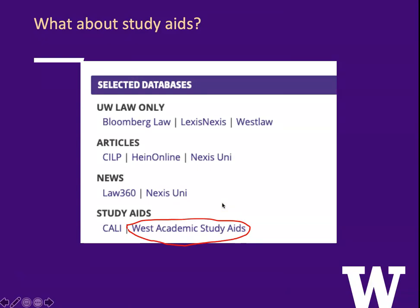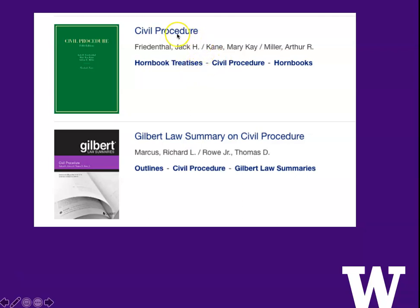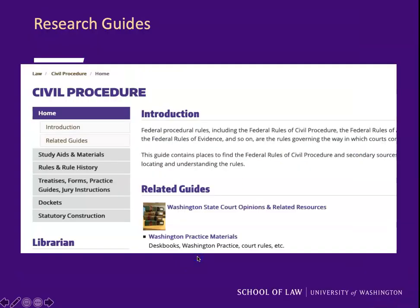What about study aids? If you're really just getting started — what is summary judgment, how does it work — I recommend looking at a study aid, and we subscribe to West Academic Study Aids online. You can go in there, look at the study aids on civil procedure and find a Hornbook, which is more scholarly and heavily footnoted, or a Gilbert's, and about a dozen other works. You could also go to our library homepage and look at our research guides. We have a research guide for civil procedure that lists study aids and treatises, so you could find out that Moore's Federal Practice and Wright and Miller are the big ones. It has a link to Washington practice materials, so using that research guide could make you even more efficient as you look for secondary sources.